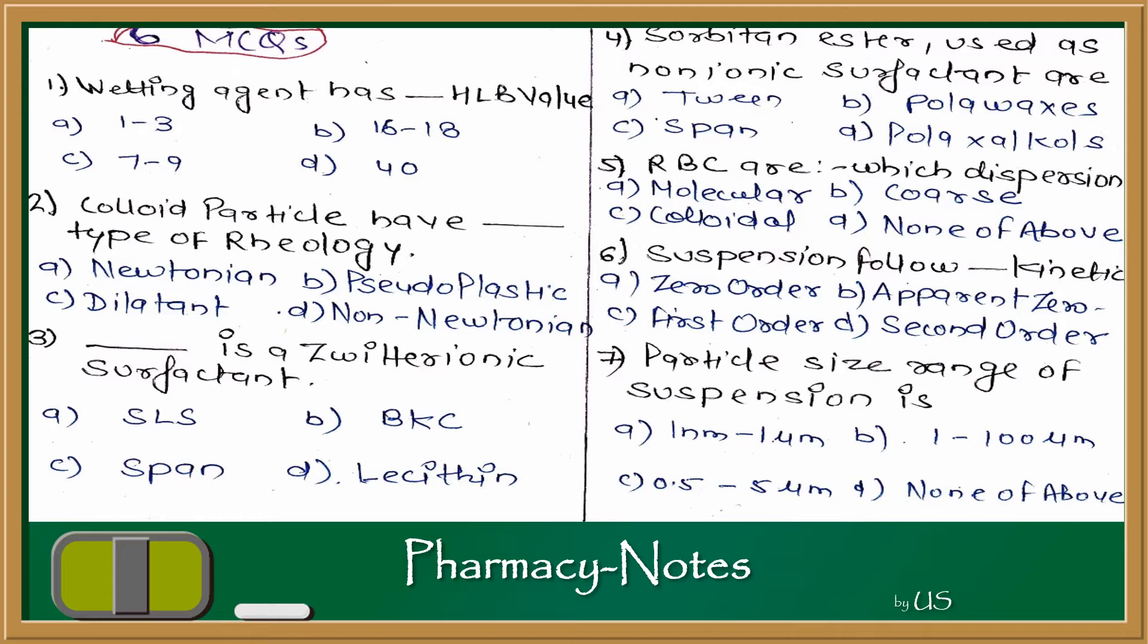First question is, Wetting Agents has HLB value - what is the range for wetting agents? If you remember from B Pharm 3rd semester, you studied the HLB graph - Hydrophilic-Lipophilic Balance. There was a 1-20 graph which shows lipophilic and hydrophilic nature. So 7-9 is in the wetting agents category and surfactant category. So this answer is C, 7-9.